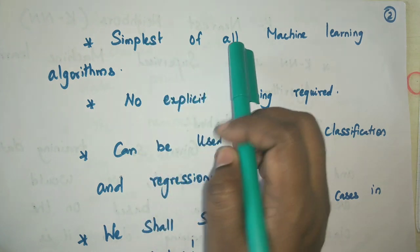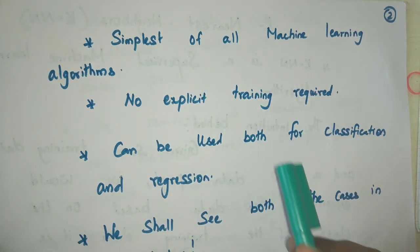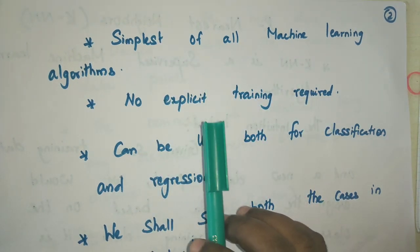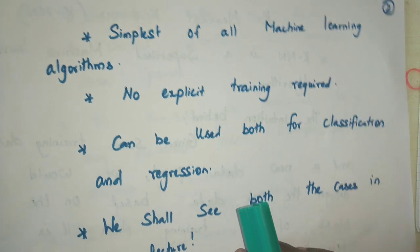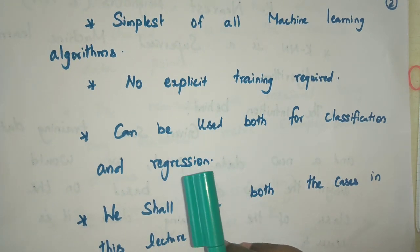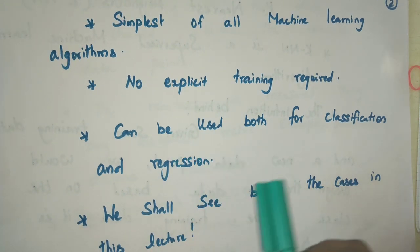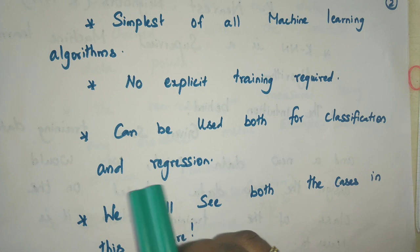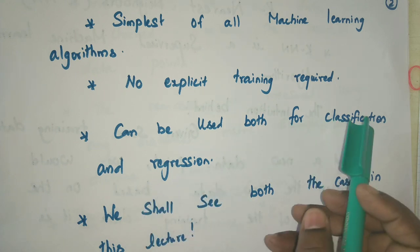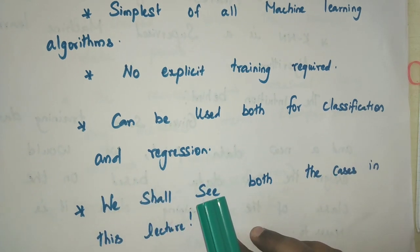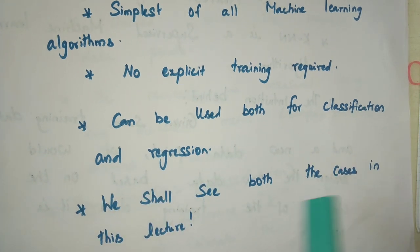KNN is the simplest of all the machine learning algorithms. Because we do not need any explicit training for this algorithm and it fits well for both classification and regression tasks. We shall see both the cases in this lecture.